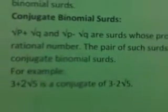Conjugate binomial SURDs: √p plus √q and √p minus √q are SURDs whose product is a rational number. When we multiply these two terms, they become a rational number. Such a pair of SURDs are called conjugate binomial SURDs. For example, 3 plus 2√5 is the conjugate of 3 minus 2√5 — the values are the same but the sign differs.